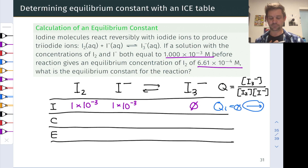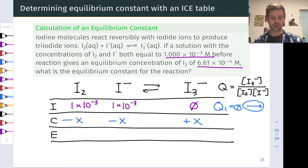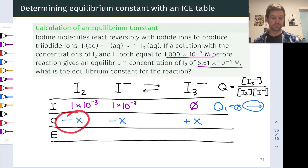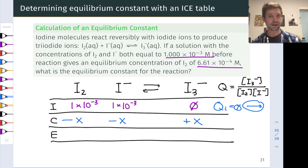This allows us to write the change line, reasoning that in going from the initial state to the equilibrium state, the reactants will disappear and the products will form — negative x moles per liter for I₂, negative x moles per liter for I⁻, and positive x for the change in I₃⁻, since there's an implied coefficient of one, and we get one I₃⁻ for every one reaction event.